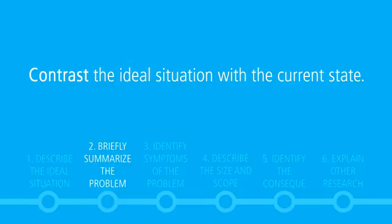Number two, contrast the ideal situation with the current state. Identify the condition that is preventing the goal, outcome, or state from being achieved.